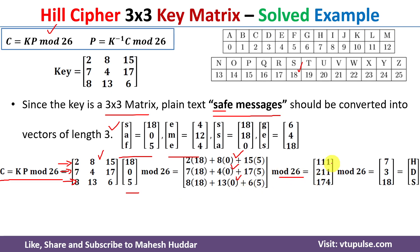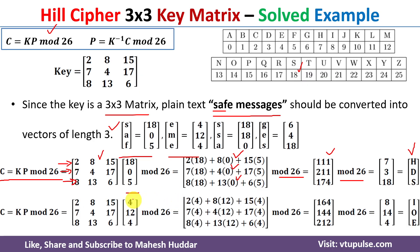Simplifying those equations gives 111, 211, and 174. After taking mod 26, we get 7, 3, and 18. Converting back to letters: 7=H, 3=D, 18=S. So the plain text 'SAF' is encrypted into ciphertext 'HDS'.